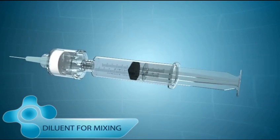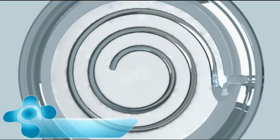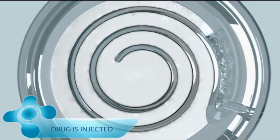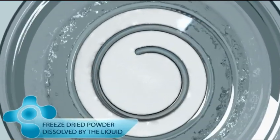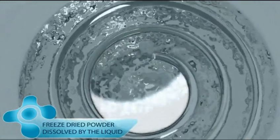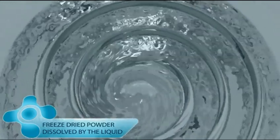When the plunger is deployed, liquid diluent flows through the top of the Liotip and into the spiral channel. The freeze-dried powder is immediately dissolved by the liquid as it moves through the spiral pathway and the reconstituted drug is injected into the patient.